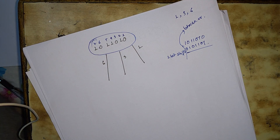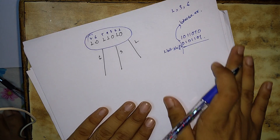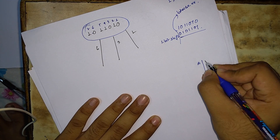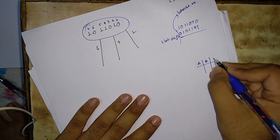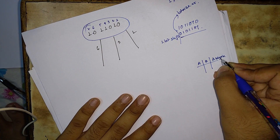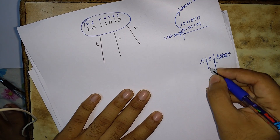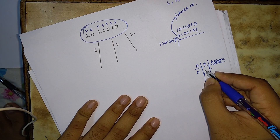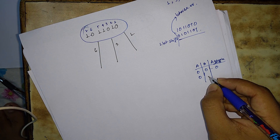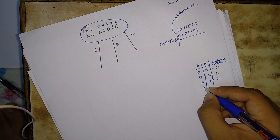Let us consider what a bitwise OR is. For two inputs A and B: zero OR zero gives zero; zero OR one gives one; one OR zero gives one; and one OR one gives one.